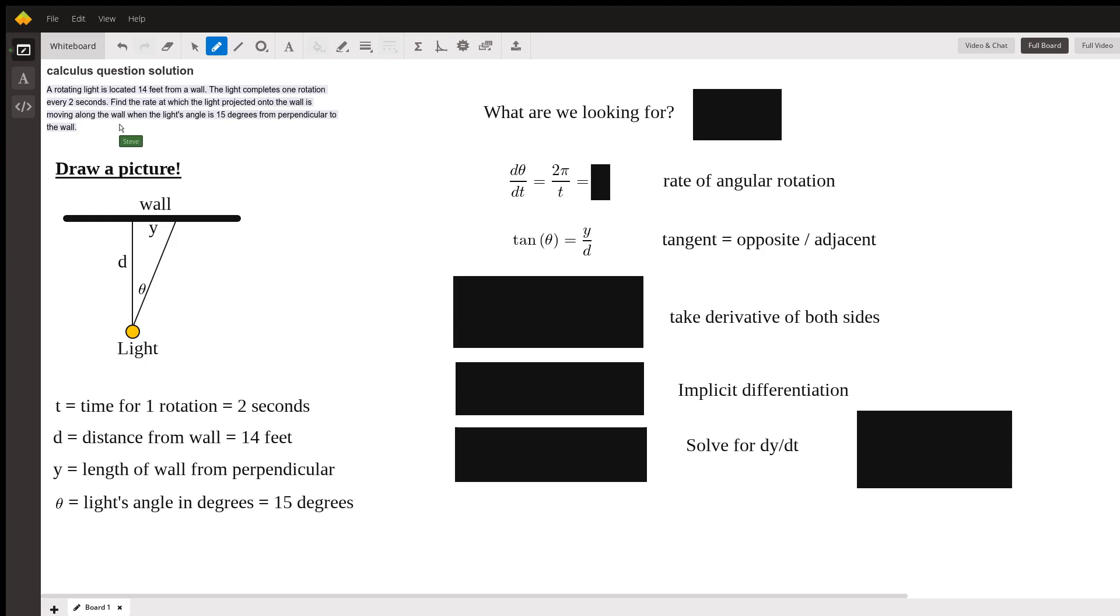When the light's angle is 15 degrees, so I've defined theta here as 15 degrees from the perpendicular of the wall. So I have all my things defined here, I have my picture to help me visualize. But again, what are we looking for? Putting that into words, let's go back to this sentence.